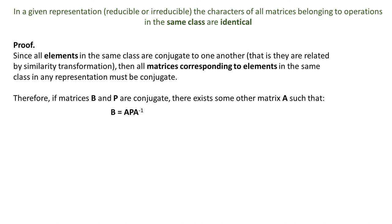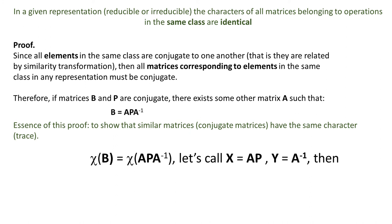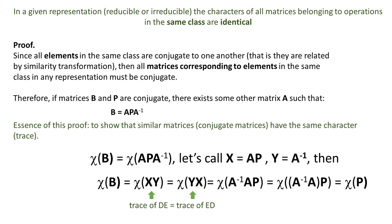If matrices B and P are conjugate, there exists a matrix A such that B equals AP A-1 and A-1 is of course the inverse matrix. The essence of this proof is to show that similar matrices have the same character. Let's call x equals AP and y equals A-1. That gives us chi xy and we know from previous slide that it is equal to chi yx. The last step is to take advantage of the fact that matrix multiplication is associative. Notice that in the brackets I set trace. As I said before, we call trace character because we are in the group theory.